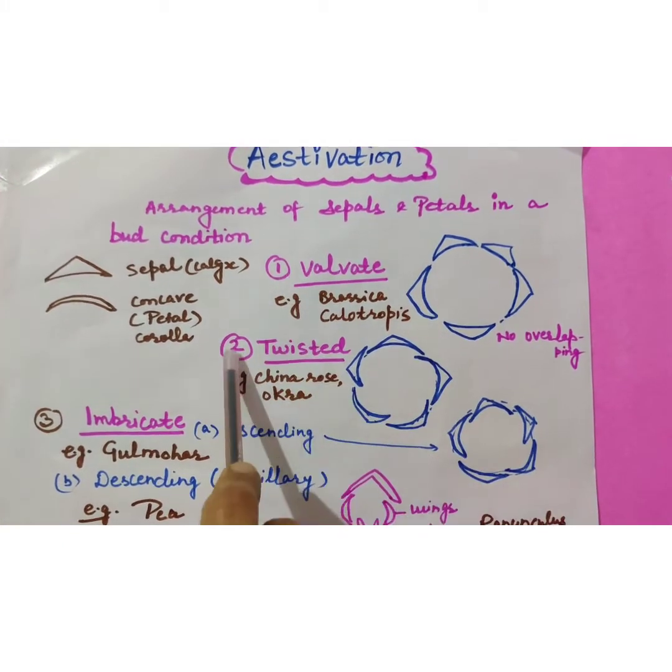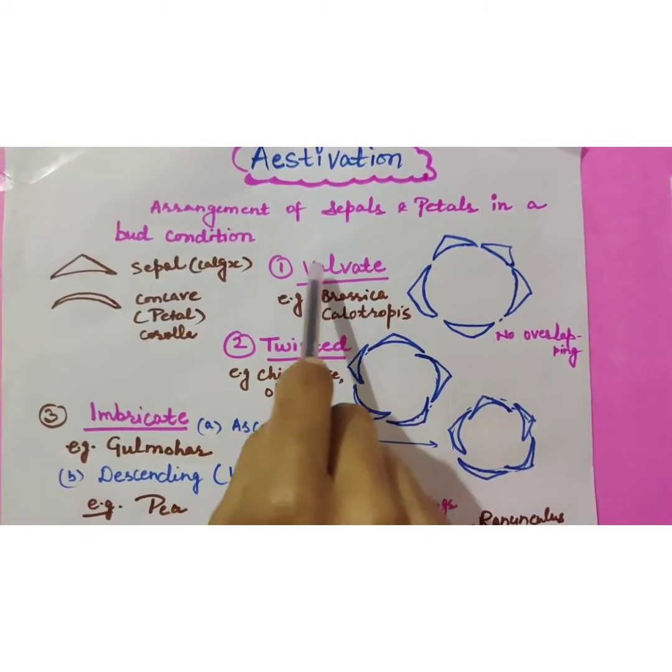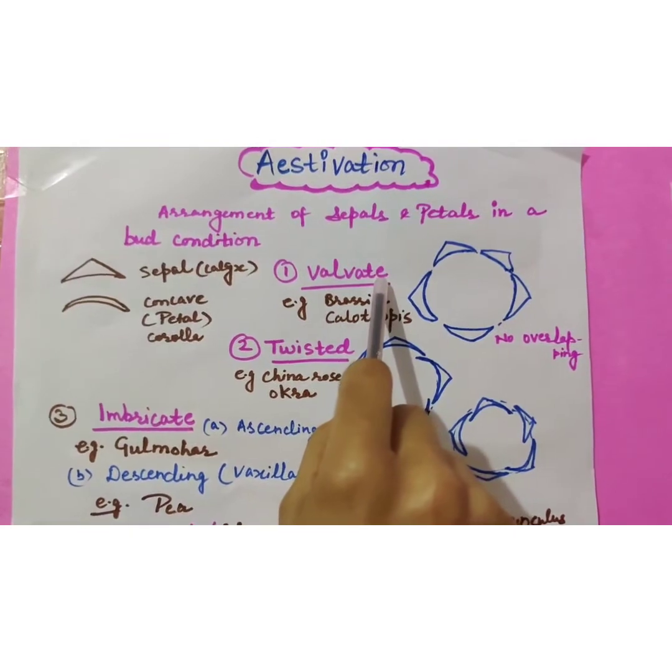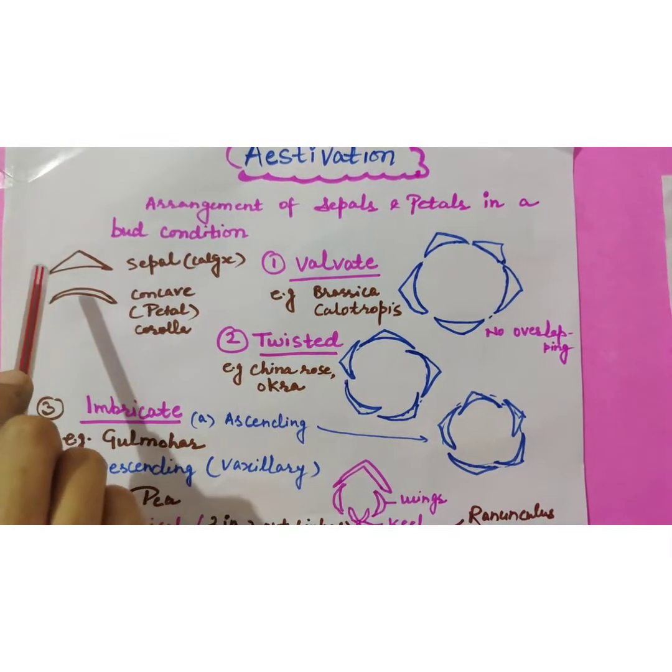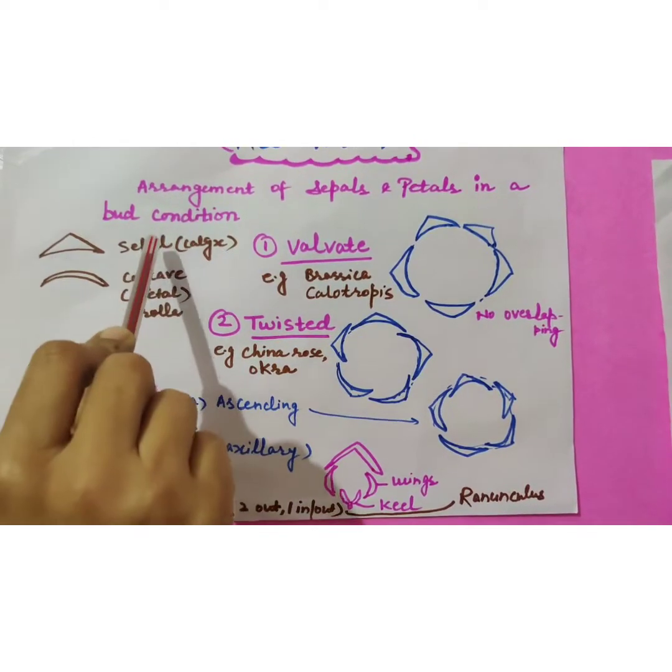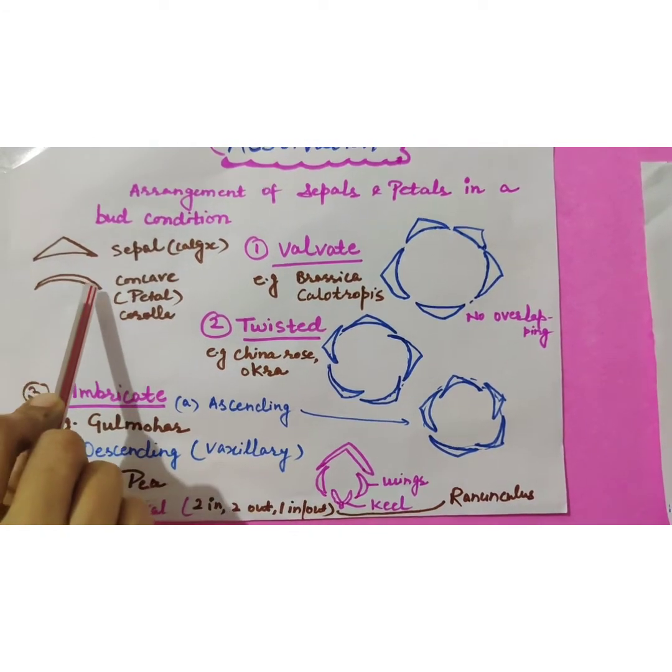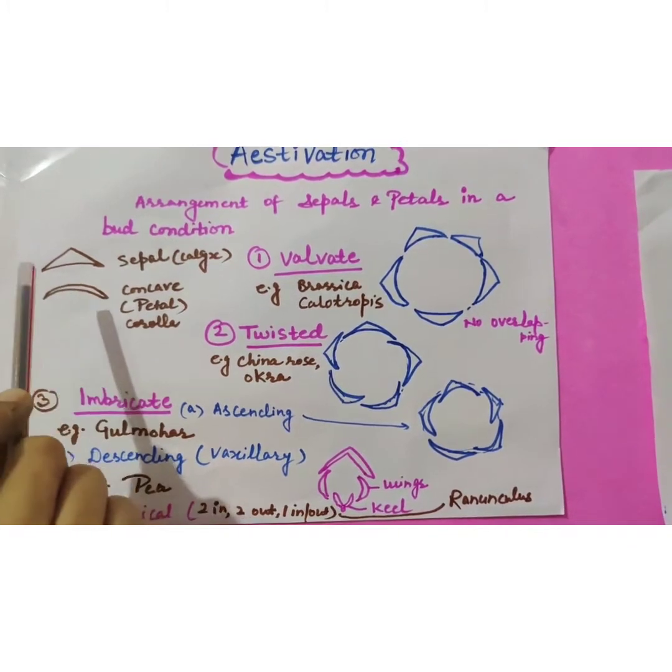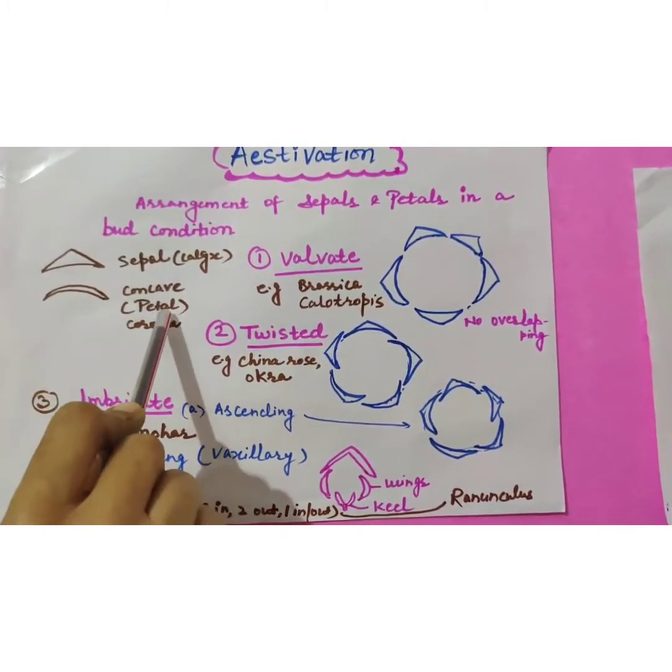Arrangement of sepals and petals in a bud condition or arrangement of sepals and petals within flower is called aestivation. Aestivation is of following types. First type is valvate aestivation.